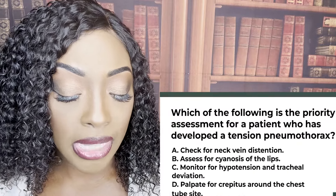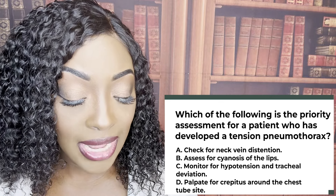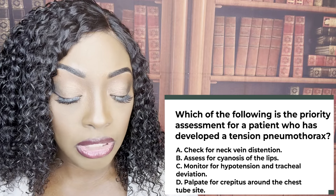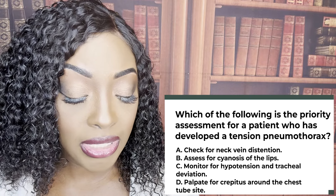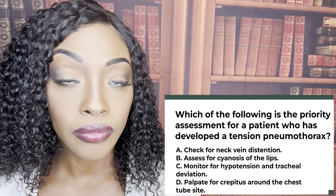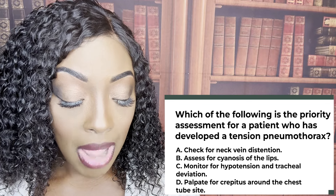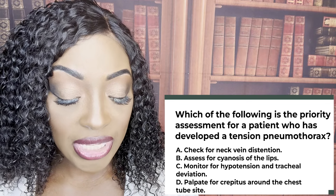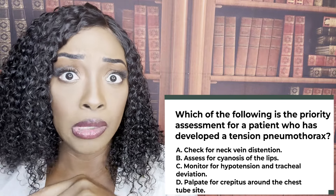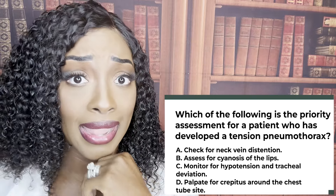Which of the following is a priority assessment for a patient who developed a tension pneumothorax? A, check for neck vein distension. B, assess for cyanosis of the lips. C, monitor for hypotension and tracheal deviation. Or D, palpate for crepitus around the chest tube. The correct answer is C, monitor for hypotension and tracheal deviation.